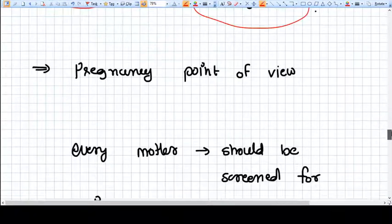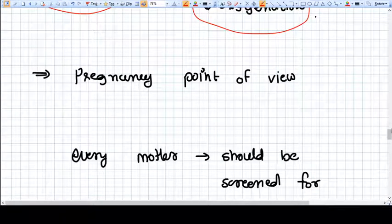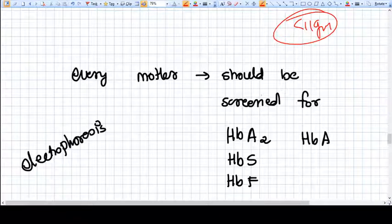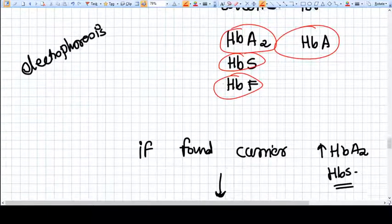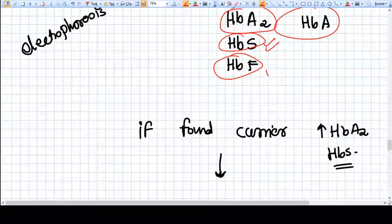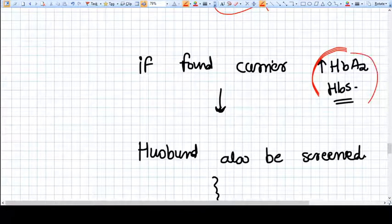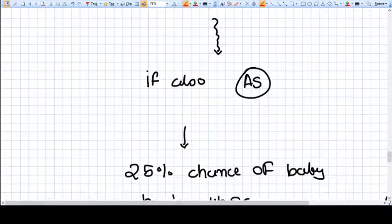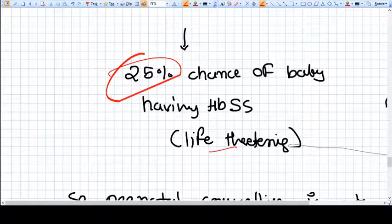Now let's see what is the pregnancy point of view. Whenever you see a patient in pregnancy, if you find that the hemoglobin level is not that well and the patient is anemic, Hb level is less than 11 grams, you need to screen that lady. How will you screen? You will do Hb electrophoresis, and for that you will get the HbA2 level, HbA level, HbS and HbF level. If HbS level is high, that means sickle cell hemoglobin is high, then you need to also screen the partner. If the carrier has HbA2 increased and HbS is there, you need to screen the partner. If the partner is also having this kind of problem, then you need to make them understand that yes, your baby has 25 percent chance of having full-blown HbSS, and this is a life-threatening disease. So preconceptional counseling is a must.